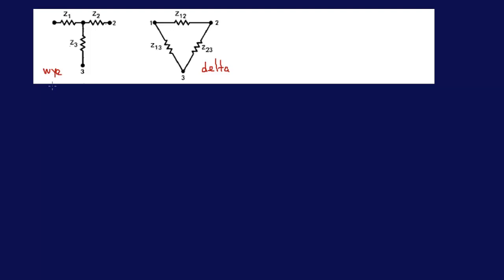So how do I derive the formulas? If I'm given a Y-connected network and I want to convert it to this — I already know this — I want to convert it to the individual z12, z13, z23. This is how I learn to do it automatically: z12, z13, z23...